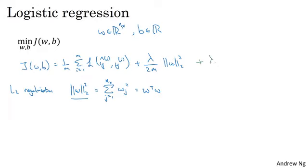Now, why do you regularize just the parameter w? Why don't we add something about b as well? In practice, you could do this, but I usually just omit this. Because if you look at the parameters, w is usually a pretty high dimensional parameter vector, especially with a high variance problem. Maybe w just has a lot of parameters, so you aren't fitting all the parameters well, whereas b is just a single number. So almost all the parameters are in w rather than b. If you add this last term in practice, it won't make much of a difference because b is just one parameter out of a very large number of parameters. In practice, I usually just don't bother to include it, but you can if you want.